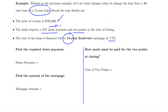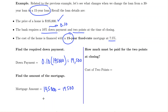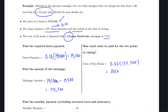The down payment is the same as before: 0.10 times $195,000 gives a $19,500 down payment. The mortgage amount is the selling price minus the down payment, which is $175,500. The cost of two points is 2% of the mortgage: 0.02 times $175,500 equals $3,510.